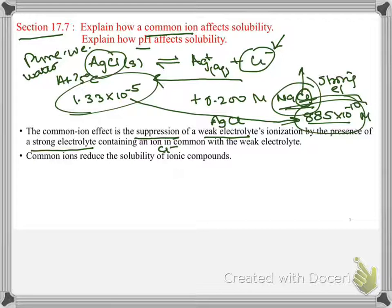So the point is, if you are adding something and it has a common ion, equilibrium will shift to the left and is going to basically affect the solubility. So, common ions reduce the solubility of ionic compounds.